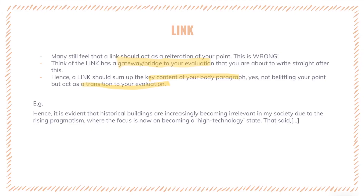A link should sum up the key content of your body paragraph — yes, it can include your point — but at the same time transit towards your evaluation with a seamless transition, letting the reader know you are going to be talking a little more in your evaluation segment. An example: 'Hence it is evident that historical buildings are increasingly becoming irrelevant in my society due to the rising pragmatism, where the focus is now becoming a high-tech state...' — this is where my evaluation would come in. The point is captured, and the evaluation would then move on to discuss Singapore becoming a high-technology state or challenge assumptions made in the body paragraph.